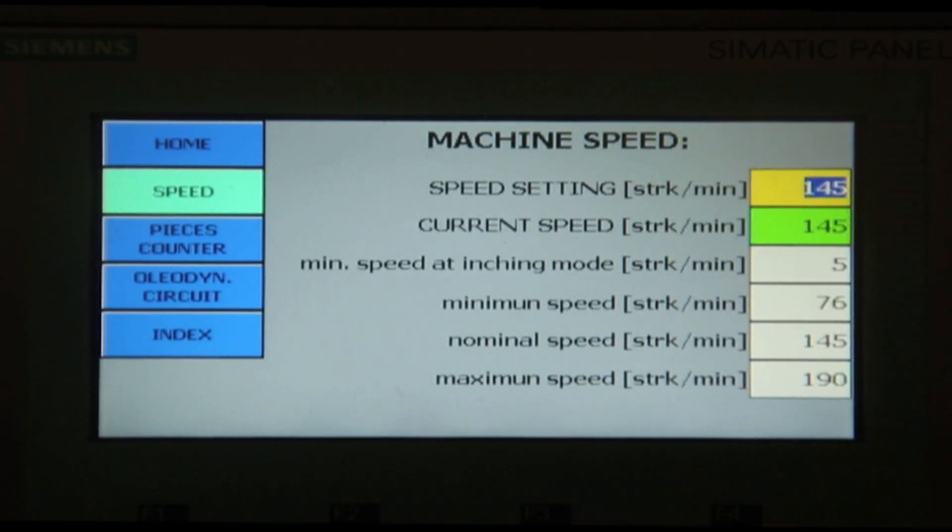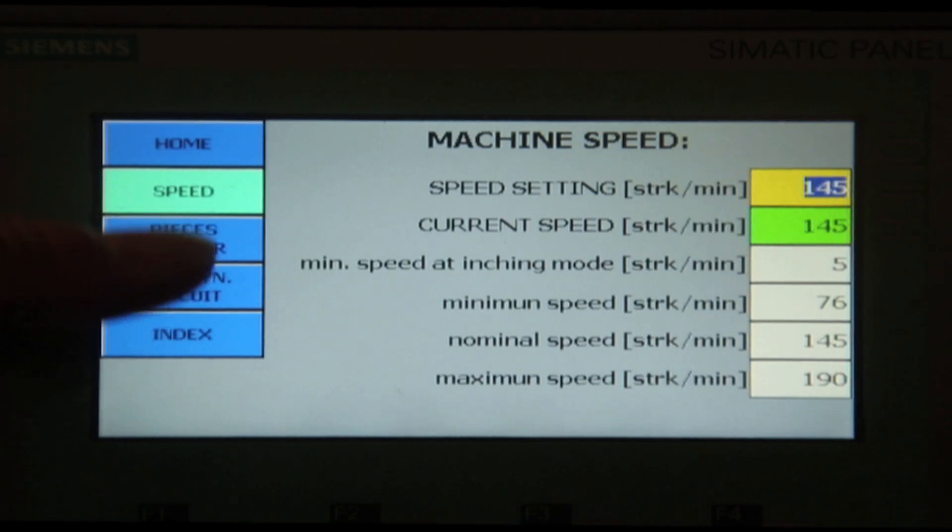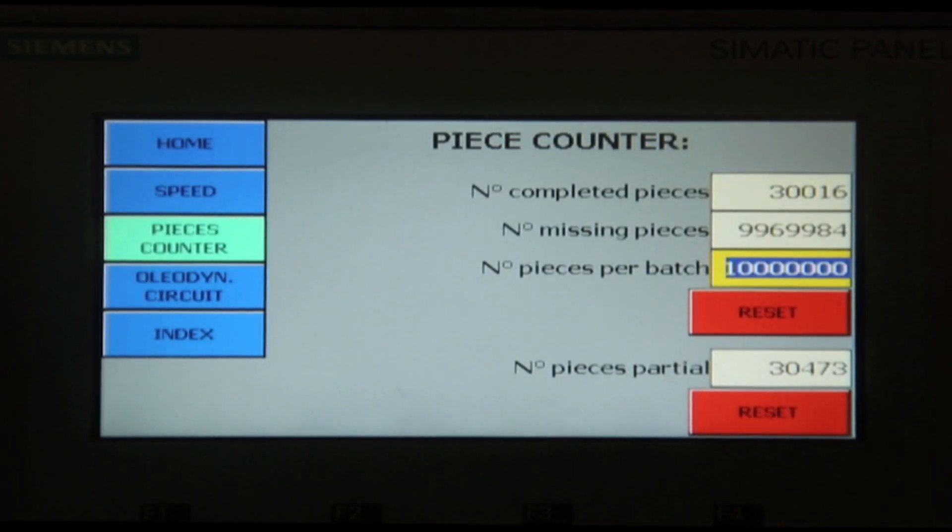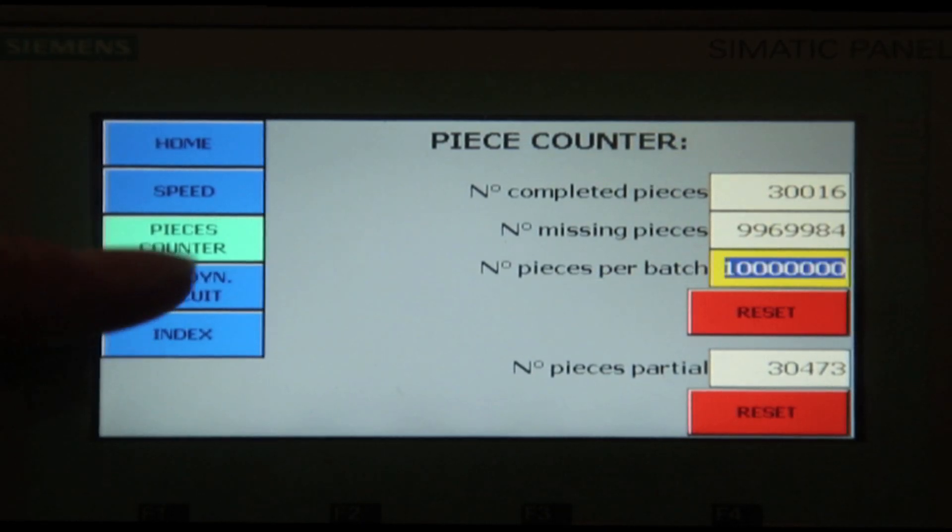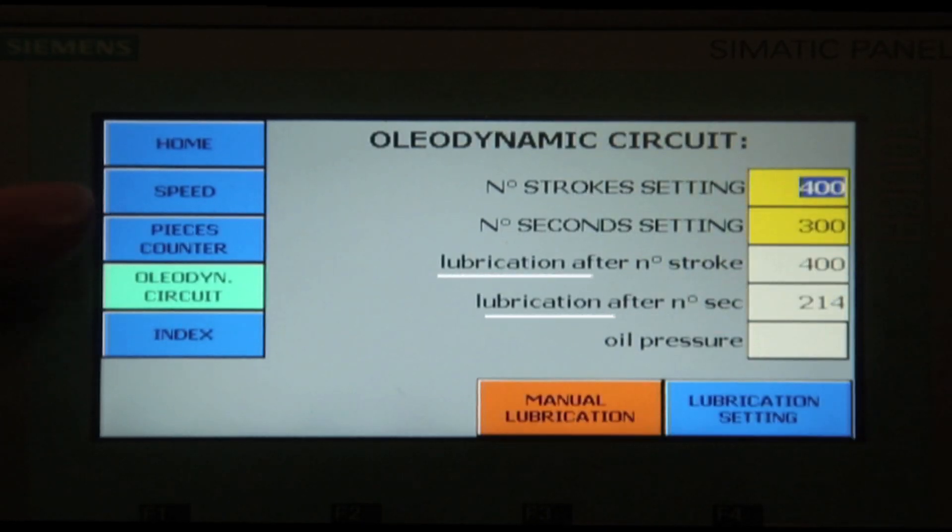Enter it in and then go into our piece counter section. Here we can set how many pieces we want for the machine to run. Also, we have an area for lubrication on the slide and the Gibbs.